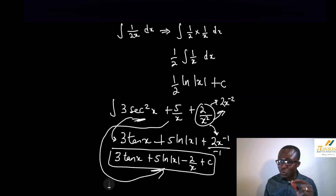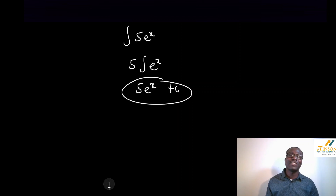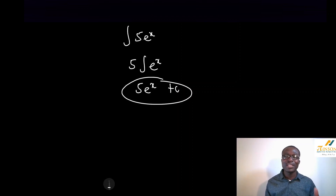Another thing a lot of students get confused with: integrating something like 5e to the x. It's very easy. The 5 is a scalar, so it stays out. You are integrating e to the x, and that becomes 5e to the x + C. Because e to the x differentiates to e to the x. So 5e to the x is just 5e to the x + C. 3e to the x would just be 3e to the x + C. This is standard integration — all you need is to use your standard.